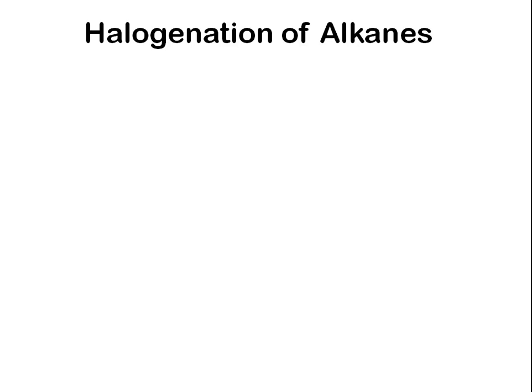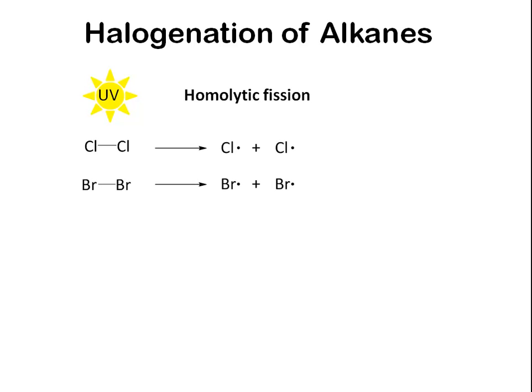Another reaction that alkanes can undergo is halogenation. This takes place in the presence of UV light, which is necessary to initiate the reaction. Halogens, such as chlorine and bromine, undergo homolytic fission in the presence of UV light. This is where the covalent bond between the atoms is broken in such a way that each atom shares one electron each from the broken bond. The resulting atoms with one free electron are called free radicals and are highly reactive. In relation to the reaction with alkanes, this homolytic fission step is called initiation.